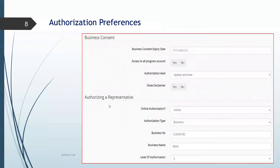Next, we go to authorization — how you can do authorization, whether you want access to all account levels and the discount or not. After that is your authorizing representative, which is mainly for T1, where you could have access to all your clients that you're preparing their personal tax. You need to add your business number, the name of the business, and what level of authorization you want.